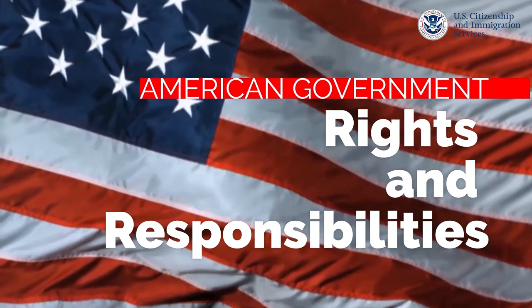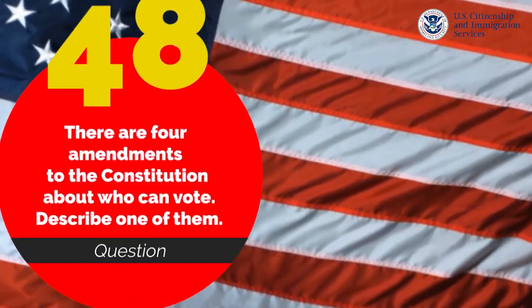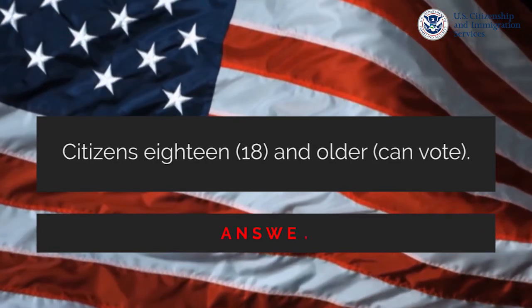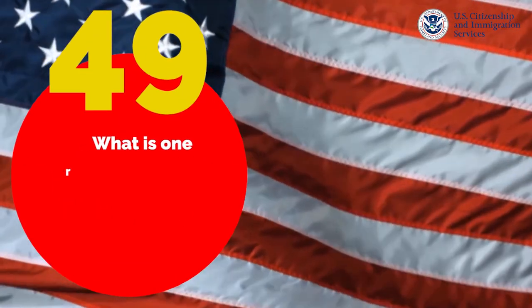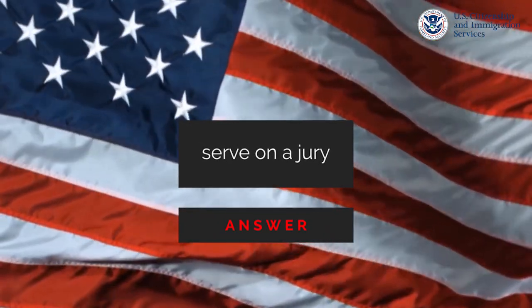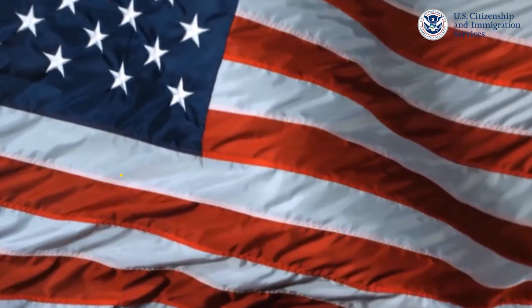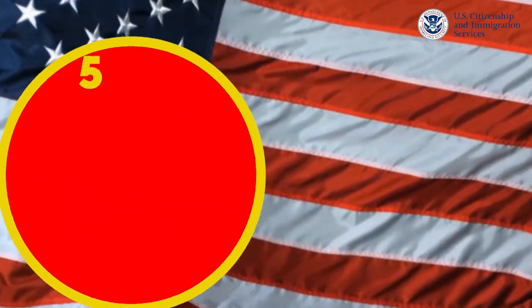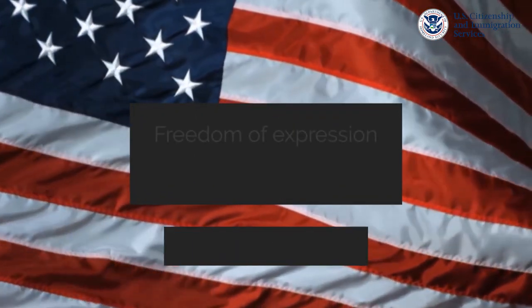Rights and Responsibilities. There are four amendments to the Constitution about who can vote — describe one of them. What is one responsibility that is only for a United States citizen? Serve on a jury. Name one right only for a United States citizen. Vote in a federal election. What are two rights of everyone living in the United States? Freedom of expression and speech.